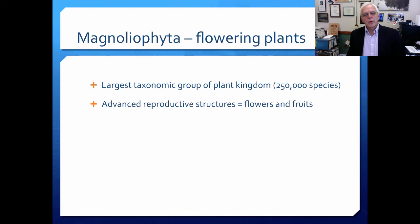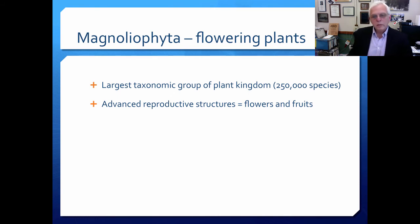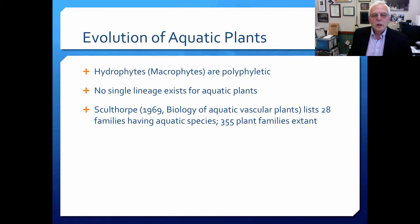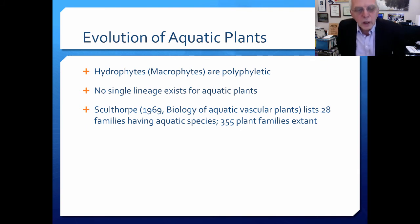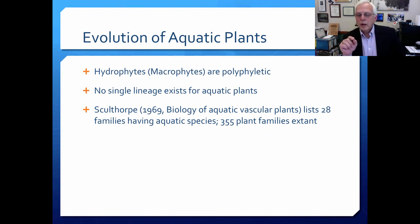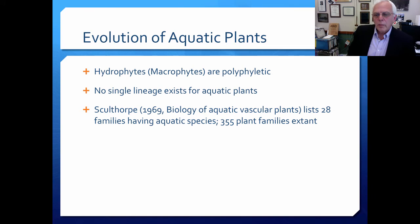The final group would be the Magnoliophyta — these are the flowering plants, the largest taxonomic group in the plant kingdom, comprising about a quarter of a million different species. They have a very advanced reproductive system with flowers and fruits with seeds. In the evolution of aquatic plants, the hydrophytes or macrophytes became polyphyletic — meaning many different groups. There's no single lineage that exists for aquatic plants. In one of the landmark works on the biology of aquatic vascular plants, Sculthorpe listed 28 families having aquatic species out of 350 plant families extant — so aquatic plants are polyphyletic, coming from about 28 different lineages.